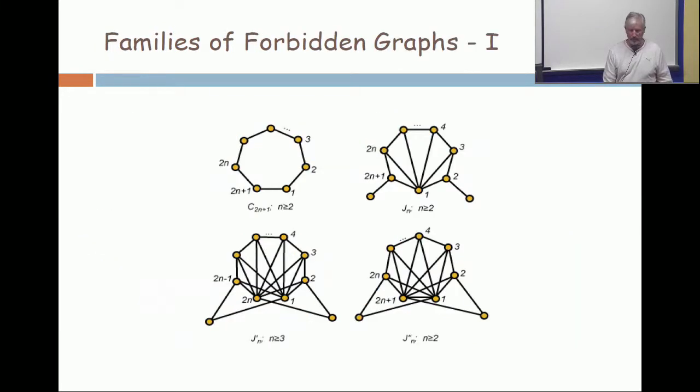Now, look at these graphs. So you can't have any of these. The first family on the left are the odd cycles, and that's where we started today's lecture with, that you can't have an odd cycle.